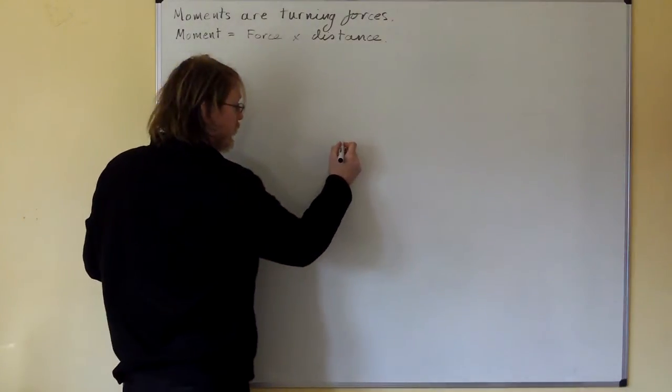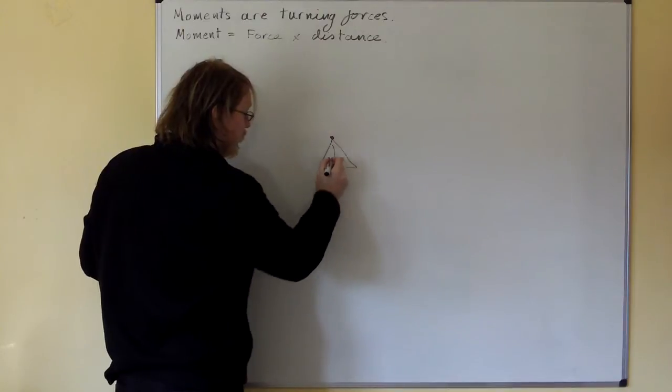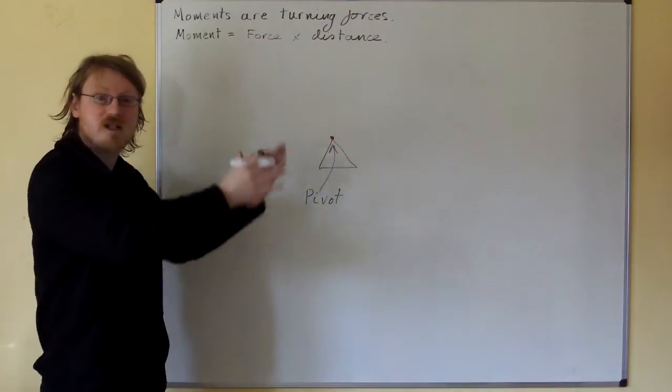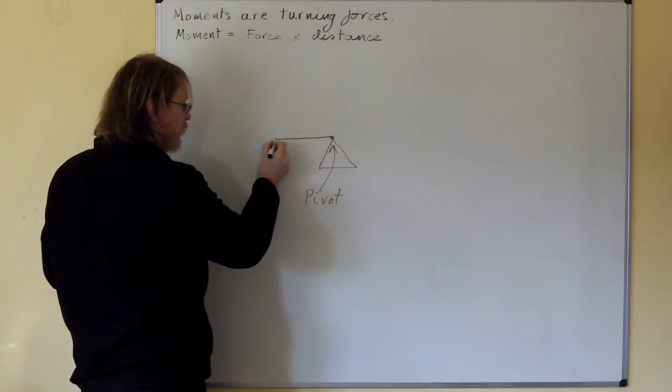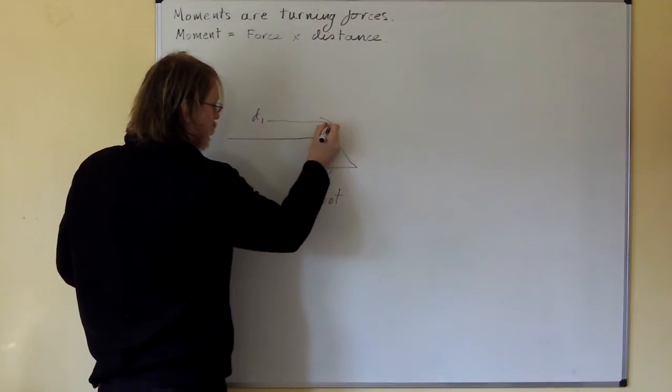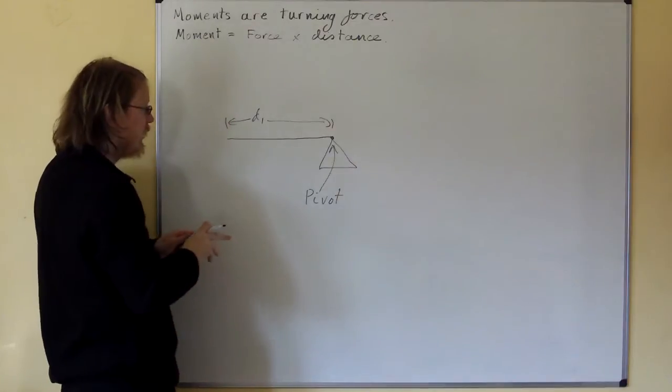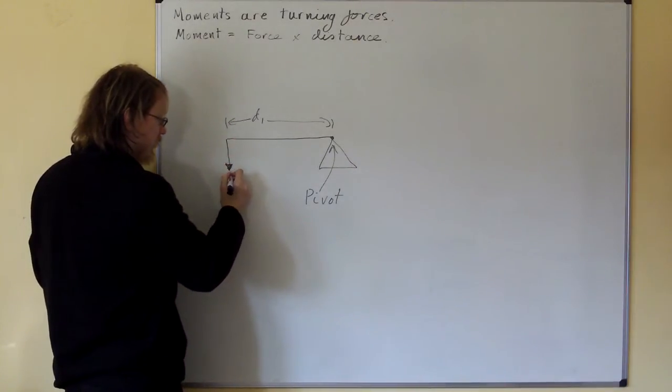So first thing is we need a pivot. We need a pivot because that is the point, this is the point about which the turning happens. Here's our pivot. Right, now we have a lever, distance 1, and we have a force at the end of that lever, F1.